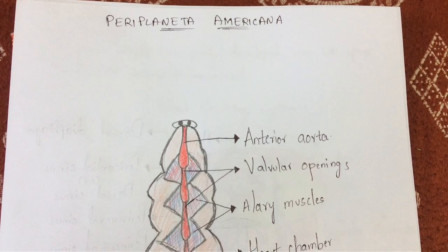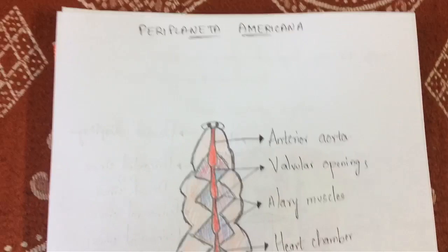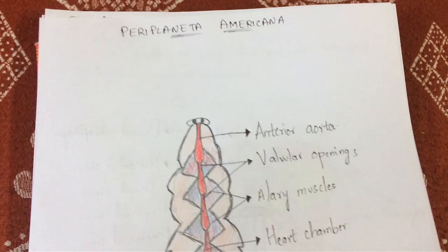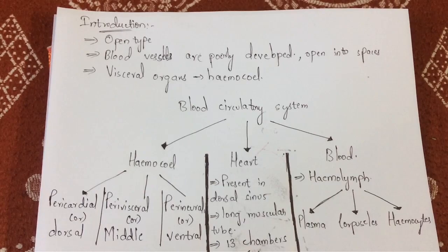Hello friends, my name is Vanindra. In this tutorial, let us learn about the circulatory system of Periplaneta americana — which means nothing but a cockroach. Let us start with the introduction. The circulatory system of Periplaneta americana mainly consists of an open type of blood circulation.